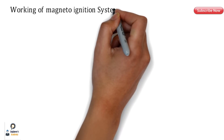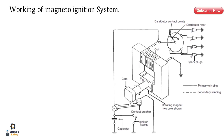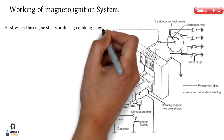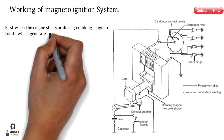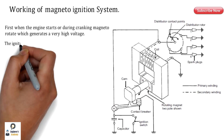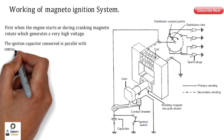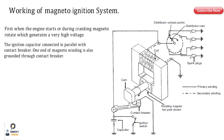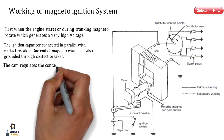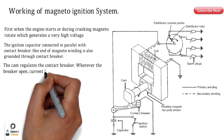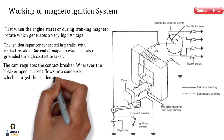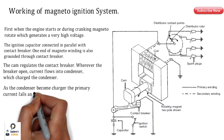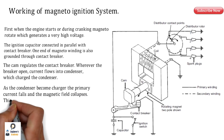The working of the magneto ignition system is similar to the battery ignition system. When the engine starts during cranking, the magneto rotates and generates a very high voltage. The ignition capacitor is connected in parallel with the contact breaker, and one end of the magneto winding is grounded through the contact breaker. The cam regulates the contact breaker. Whenever the breaker opens, current flows into the condenser instead of the distributor, and the condenser gets charged.